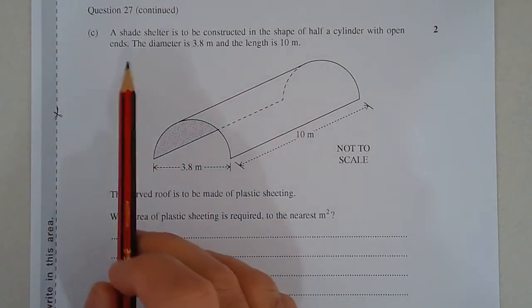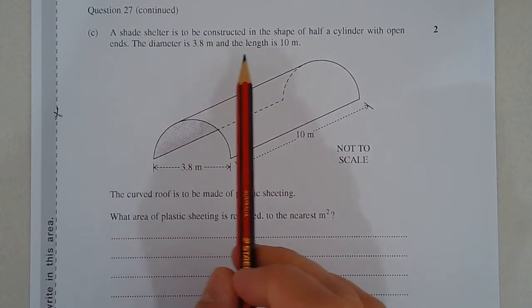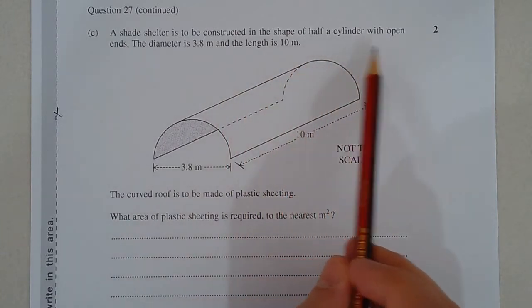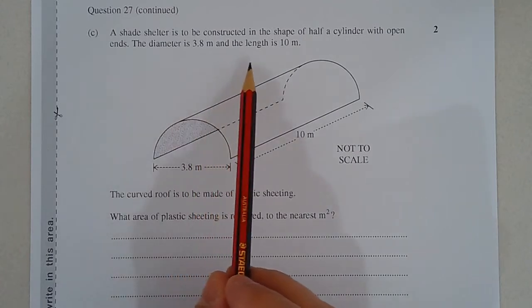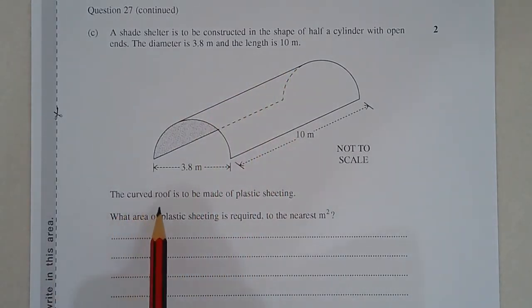Question 27C. A shade shelter is to be constructed in the shape of half a cylinder with open ends. The diameter is 3.8 meters and the length is 10 meters. The curved roof is to be made of plastic sheeting. What area of plastic sheeting is required to the nearest square meter?